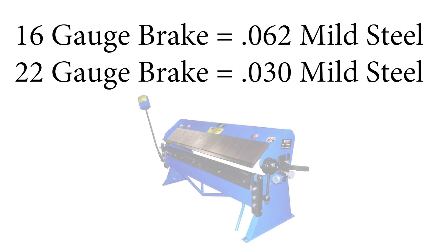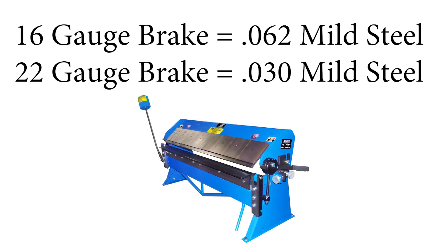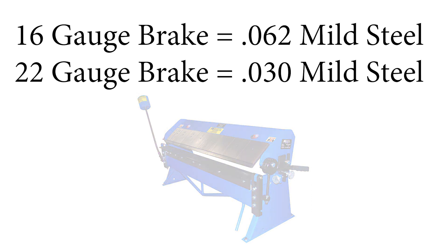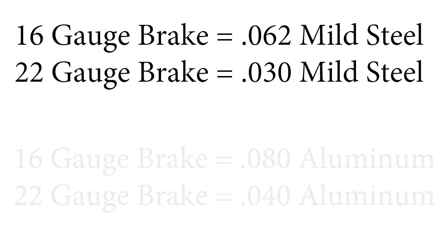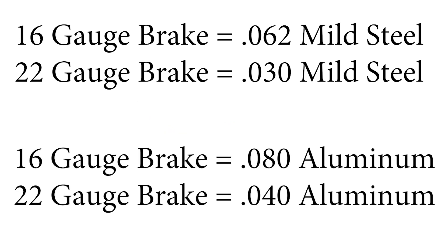For example, a 16 gauge brake is capable of bending 16 gauge, that would be 0.062 inches, in mild steel. And a 22 gauge brake is capable of bending 22 gauge or 0.030 mild steel. Even though the standard for gauging brake capacity is using mild steel, we can get away with bending a little bit thicker material when bending aluminum.